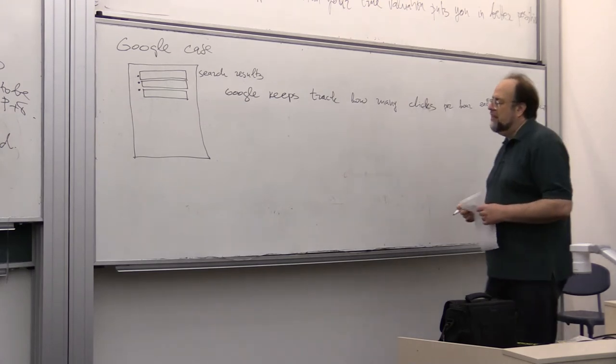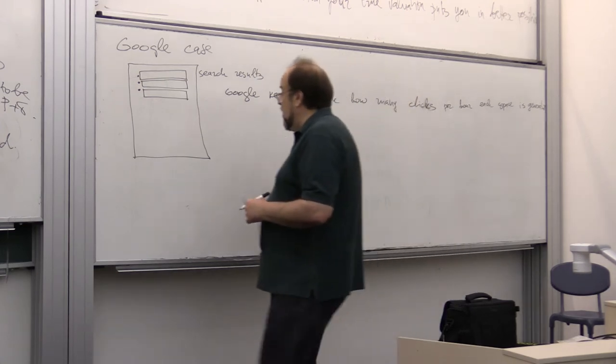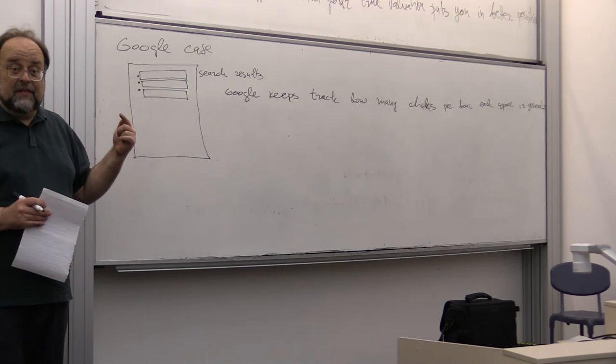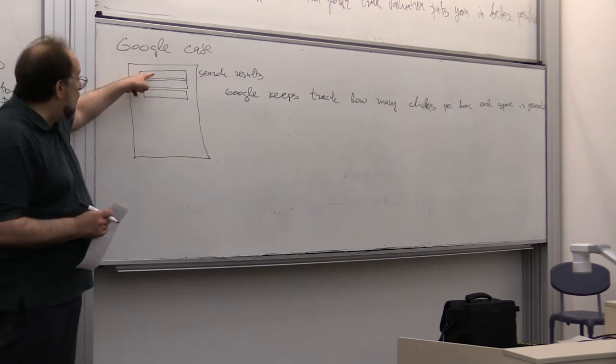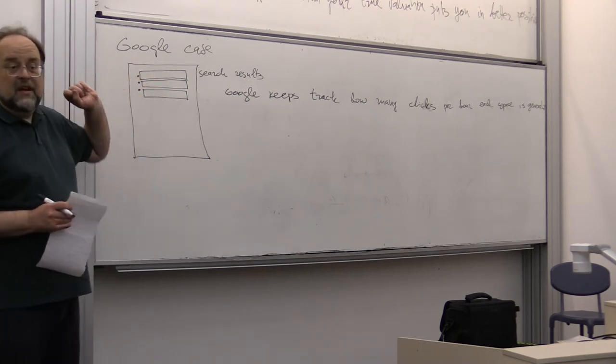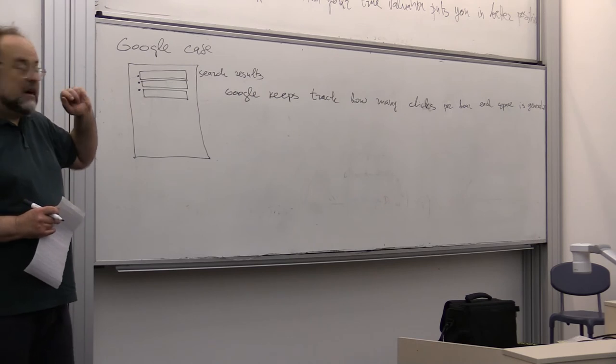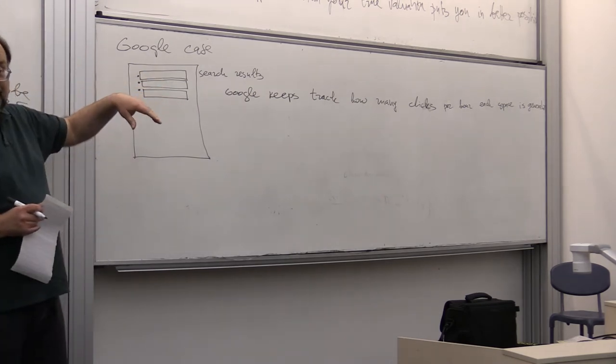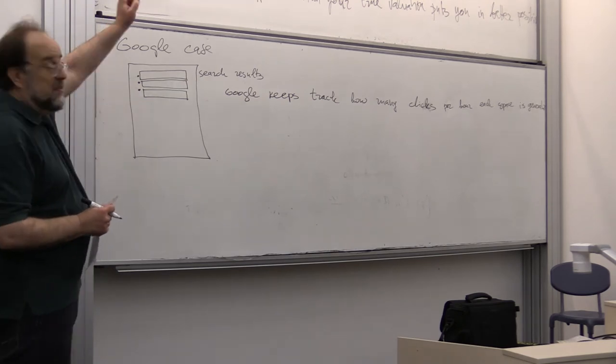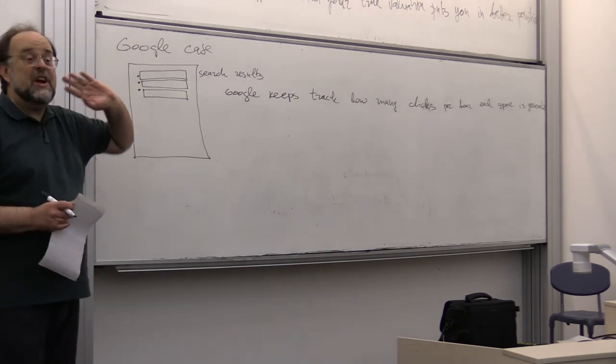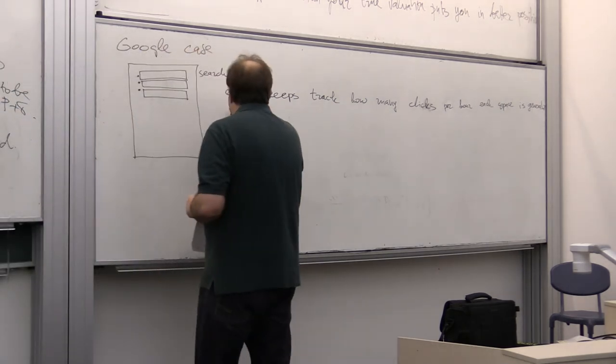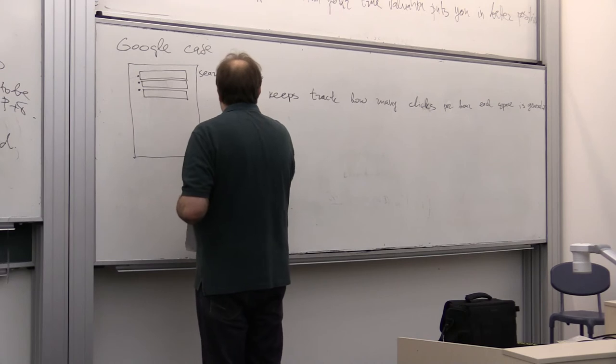So, these are the spaces in which you can place your ad. And the experience shows that the number of clicks that each place gets decreases for the places that are lower down on the search results. So, and Google keeps track of statistics of how many clicks per hour each of the places generates. So, Google keeps track of how many clicks. Clicks. Like this. This is when you rely on software to correct your spelling that you stop paying attention. Google keeps track of how many clicks per hour each space, the number of clicks per hour each space is generating.